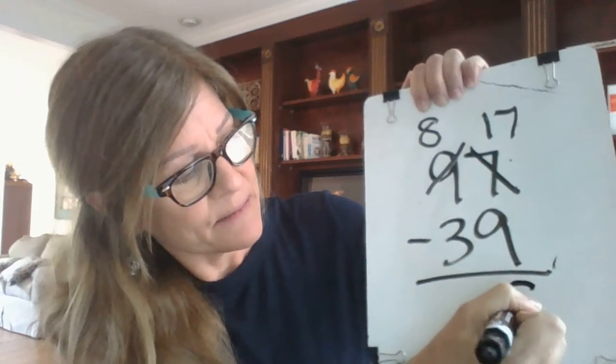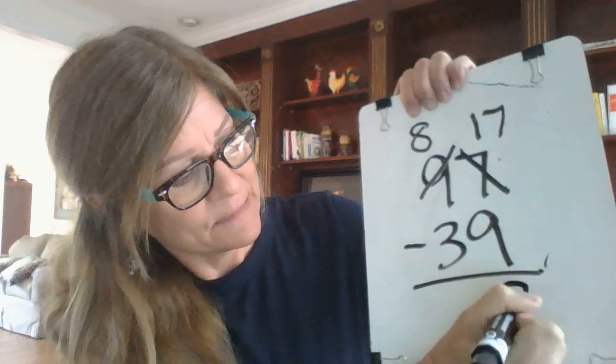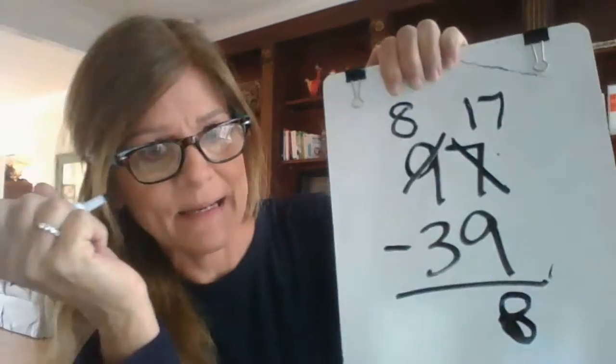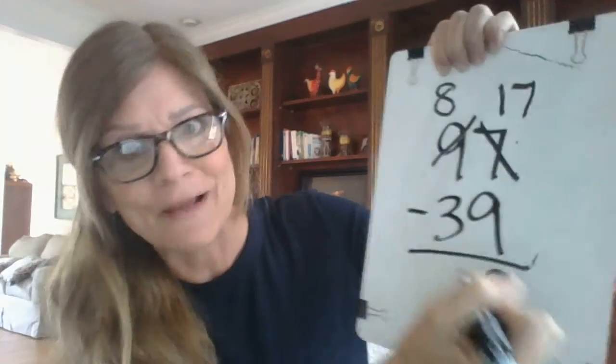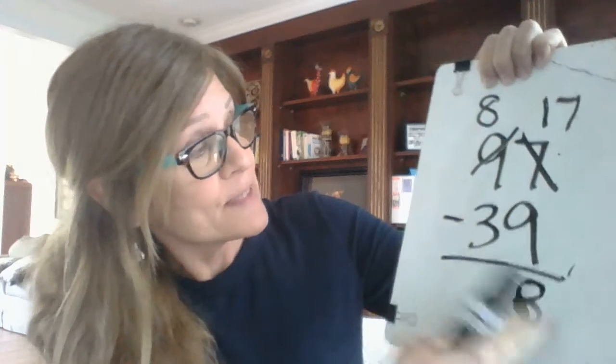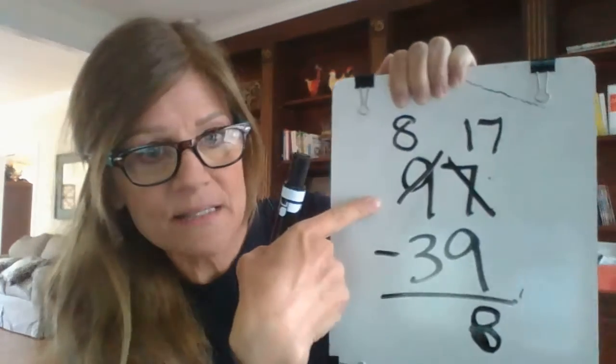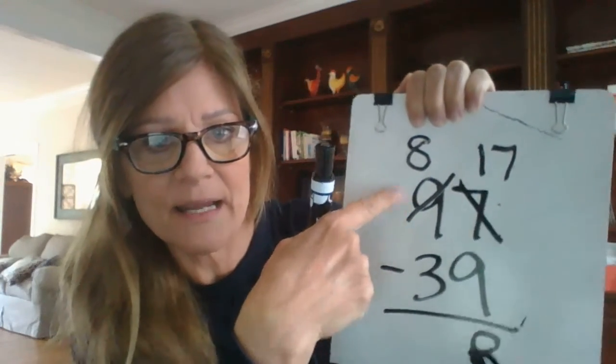So I'm going to put my eight down here. Ooh, that looks like a crazy eight, but that's an eight. Sorry about that. It's hard to write and hold this at the same time. Okay, so that's an eight. And then I'm going to go over to my tens column and I'm going to subtract. Eight minus three.